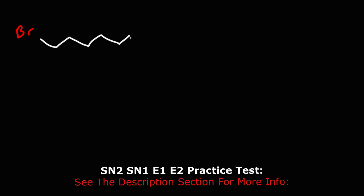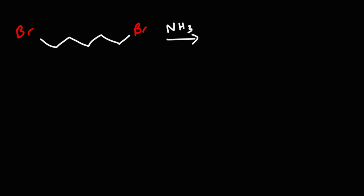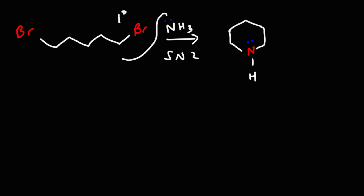Let's look at another example. Here we have 1,5-dibromopentane, and we're going to react it with ammonia. This reaction can give a mixture of products, but we're going to focus on the formation of one product and propose a mechanism for it. Ammonia is a nucleophile and also a weak base, and what we have here is a primary alkyl halide, so we're going to get an SN2 reaction — the nucleophile attacks from the back, kicking out the leaving group.